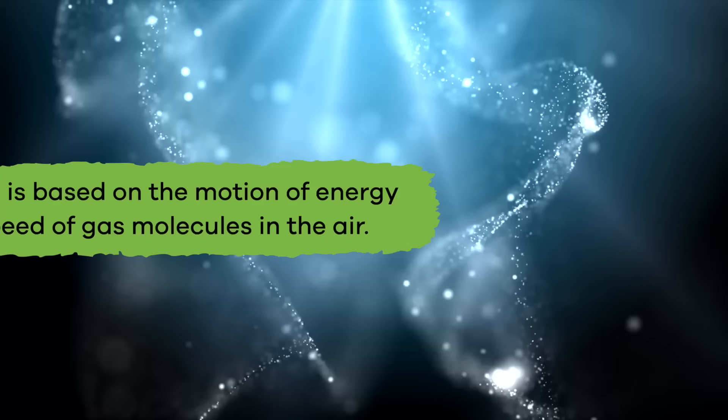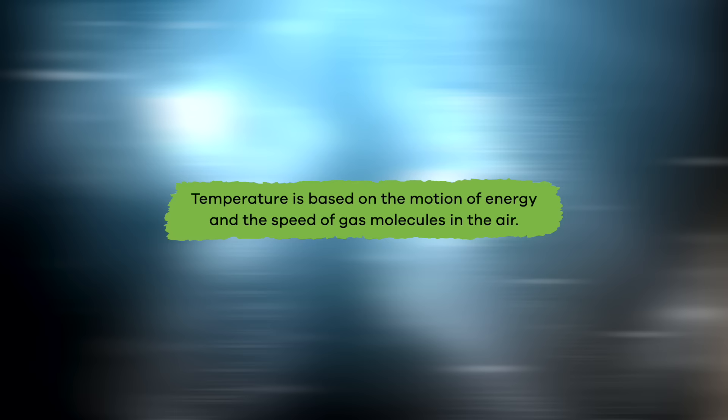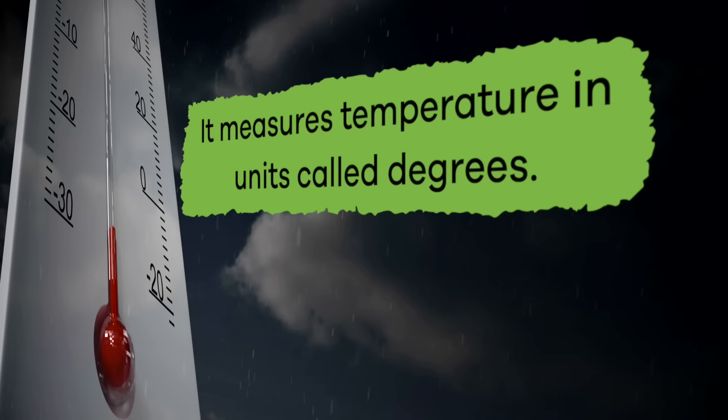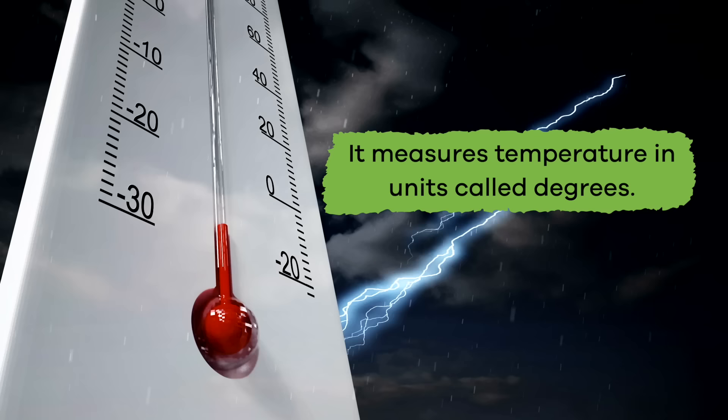Temperature is based on the motion of energy and the speed of gas molecules in the air. If the gas molecules are moving faster, the temperature will get higher, meaning that the weather gets hotter. Can you guess what is used to determine temperature? That is right! It is a tool called a thermometer, and it measures temperature in units called degrees.